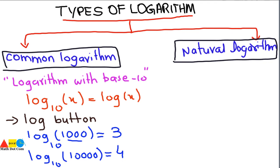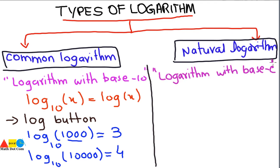Now let's move towards the natural logarithm. The natural logarithm is defined as the logarithm with base e. Here e is a constant value that serves as the base. The logarithm with base e is called the natural logarithm. This means that here we have e in the base rather than ten, as in the case of common logarithm. We can write it as log base e of x.